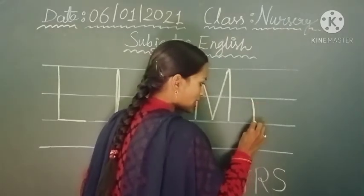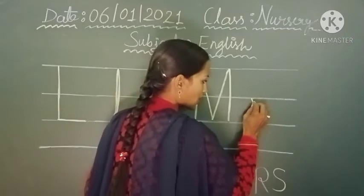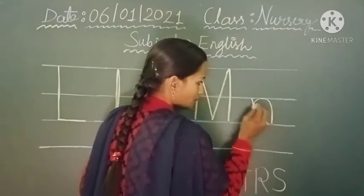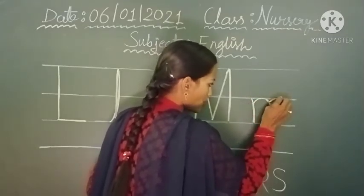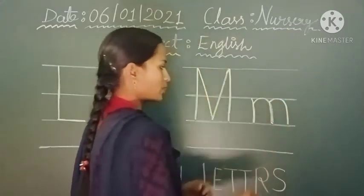First, we have a standing line and then after, one curve line and again one curve line.